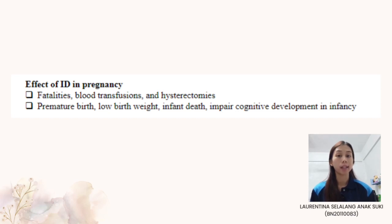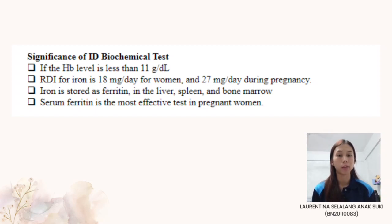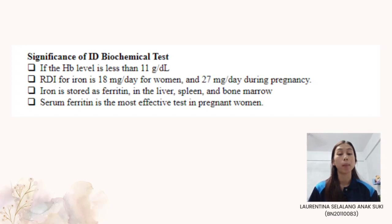Postpartum anemia is caused by insufficient iron intake before and during pregnancy as well as blood loss during delivery. It has been linked to depression, stress, anxiety, cognitive impairment, decreased mother-infant attachment, and infant developmental retardation. A postpartum hemoglobin concentration less than 10g/dL indicates clinically significant anemia. In iron deficiency anemia, biochemical tests such as serum iron concentration, total iron binding capacity (TIBC), transferrin concentration, and ferritin concentration are reduced. The recommended dietary intake (RDI) for iron is 18mg per day for women and 27mg per day during pregnancy.